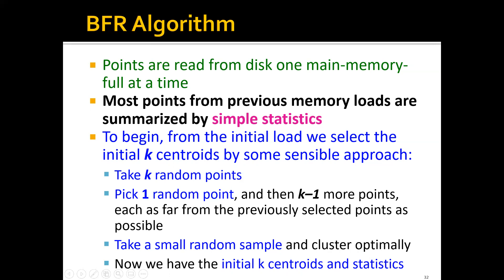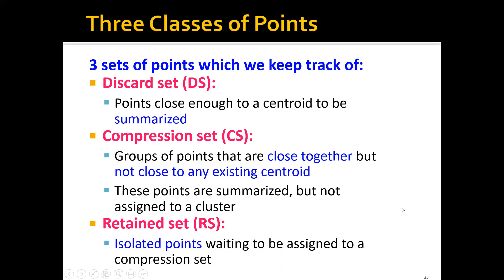Now that we have the initial k centroids and statistics, we will maintain three sets of points in the process. We'll maintain the discard set - these are the points that are close enough to a centroid to be summarized. So these points will be summarized and absorbed into some centroid of the cluster and then discarded. The second set will be the compression set - groups of points that are close together but not close to any existing centroid. These are like mini clusters. The third set will be the retained set - isolated points waiting to be assigned to a compression set.